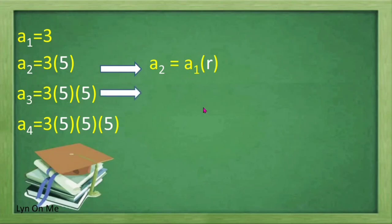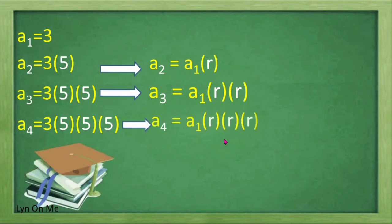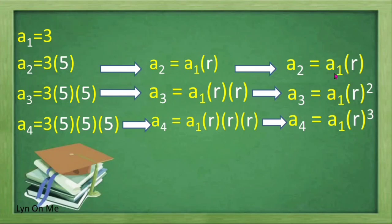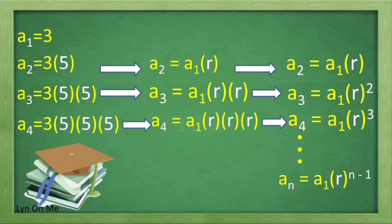A sub 3 equals A sub 1 times R times R. A sub 4 equals A sub 1 times R times R times R. Writing this in exponential form: A sub 2 equals A sub 1 times R squared, and A sub 4 equals A sub 1 times R cubed. The exponent is 1 less than the value of n, so we arrive at the formula for geometric sequence: A sub n equals A sub 1 times R raised to n minus 1.